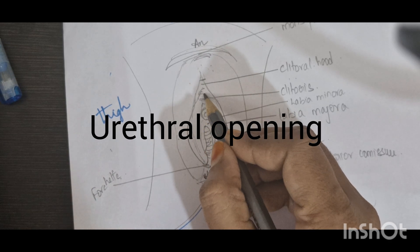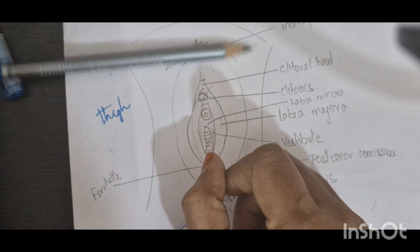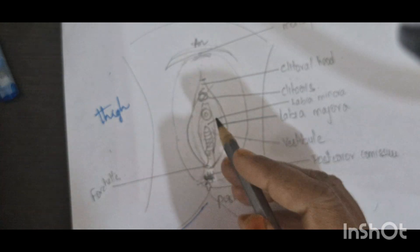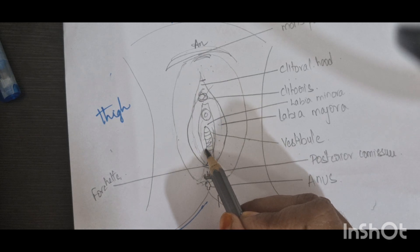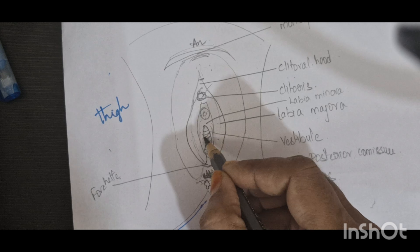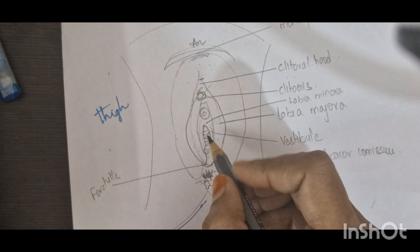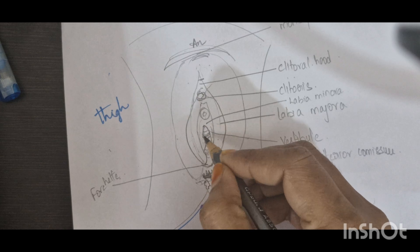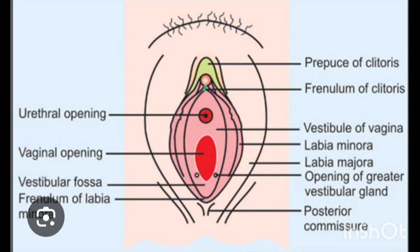Above the vestibule there is a small structure called the clitoris. Below it is the urethra and the vaginal opening. In the vaginal opening, a small layer will be present called the hymen — it is a fold of skin that will be ruptured during later stages.